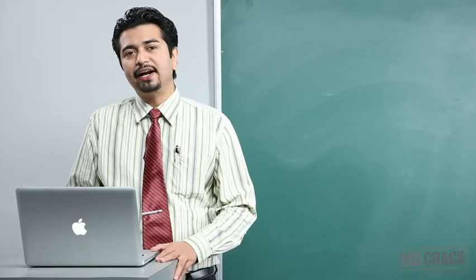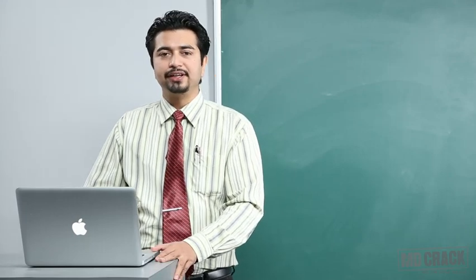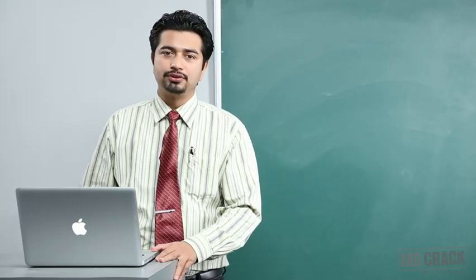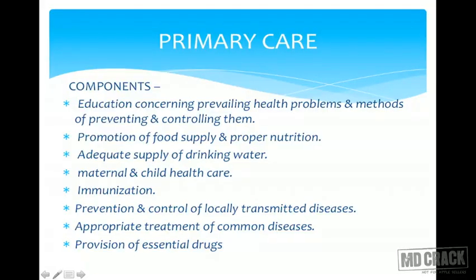Remember we had discussed some important issues with primary health care; we will be elaborating on those points now. The components of primary health care include: education concerning prevailing health problems and methods of prevention and control of these health problems — basically health education about existing problems.